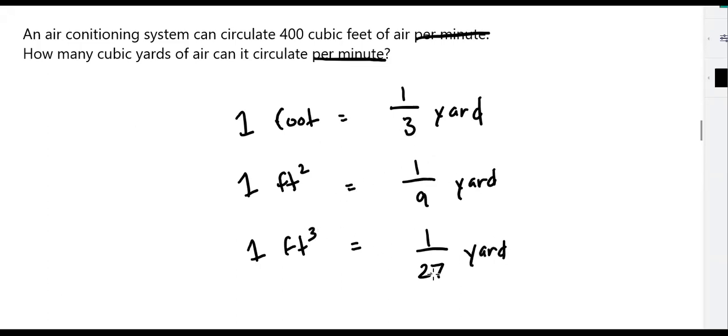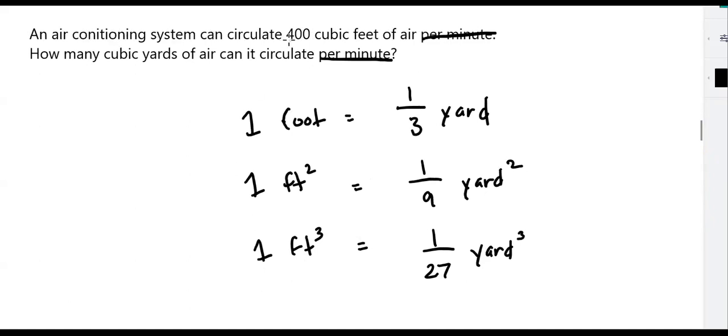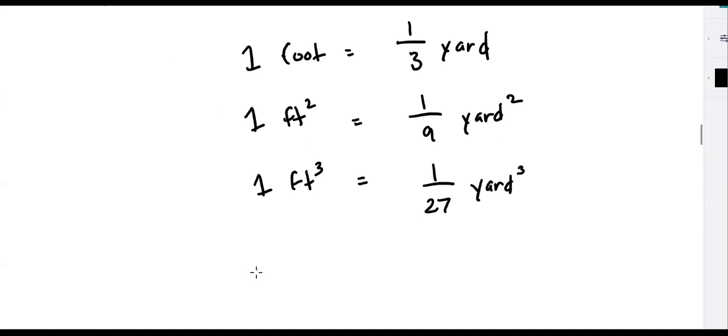So we have a couple of conversions here that are helpful. If we have cubic feet and we want to go to cubic yards, we're going to divide by 27, and that's what we want to do here. We have 400 cubic feet and we would like to get to cubic yards. So according to our conversion factors, to get from cubic feet to cubic yards, you divide by 27.